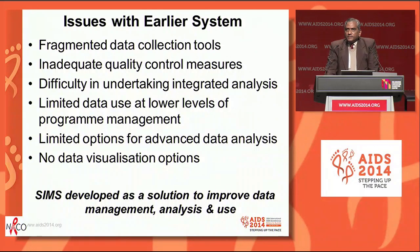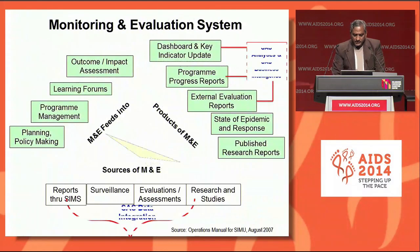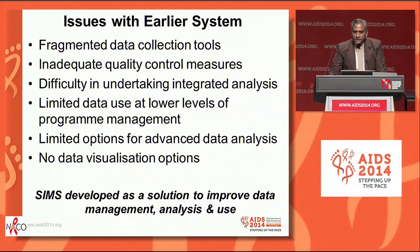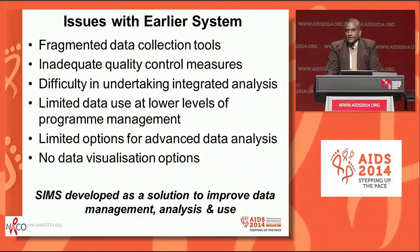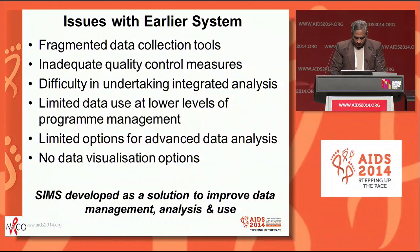In terms of the M&E system, the earlier system we had was paper-based, where information came to the state AIDS control societies and was then transferred to the central level where it was uploaded. So there were a lot of fragmentation in the data collection tools. There was inadequate quality control measures, and we faced difficulty in undertaking integrated analysis. At the lower levels of program management, there was limited use of data. People felt that this was just data to be transmitted to the state level and the central level. They did not perceive any use for it, and they did not realize the importance of the data that they were providing. There were limited options for advanced data analysis, and there were no data visualization options available. Hence, we embarked on this process for developing and implementing a strategic information management system.